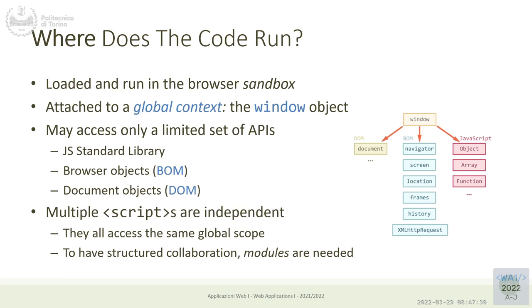In Node.js we didn't use the global object — there was one implicit object called global, but normally we don't need to use it because we can just use the resources of the operating system. In the browser, to access anything we can only access what the window object allows us to use. Every single page — if you open three tabs in a browser — each tab has its own independent global environment for the JavaScript code, something inside a single browser tab.